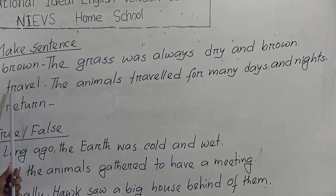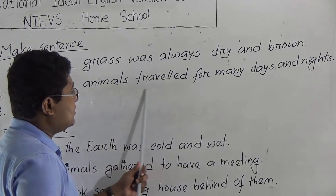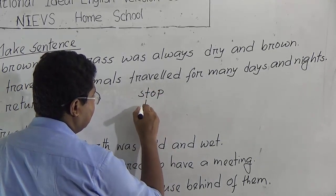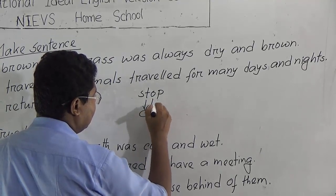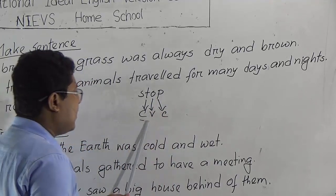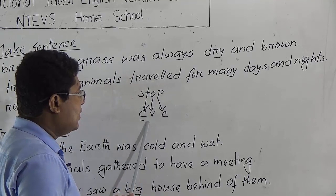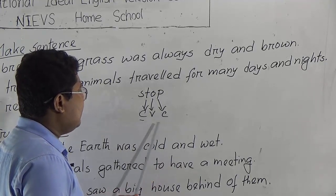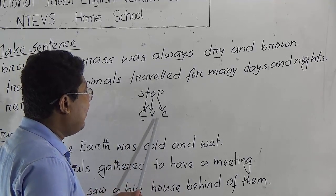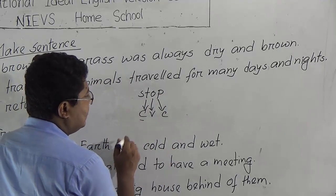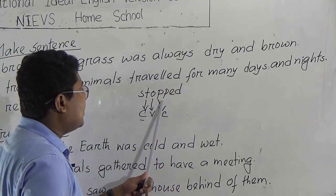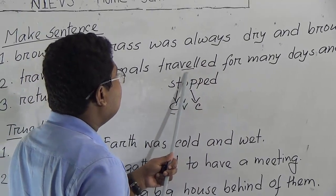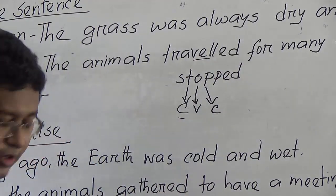Now, the word is 'travel' — T-R-A-V-E-L — but here we have written 'traveled' — T-R-A-V-E-L-E-D. Why? Look at the CVC rule: if CVC comes — Consonant, Vowel, Consonant — in a word, and we want to make the past participle form, we have to repeat the last consonant. So for 'traveled,' the ending is L — C-V-C — that is why we have added another L. When we are doing the past participle form, we follow this rule.